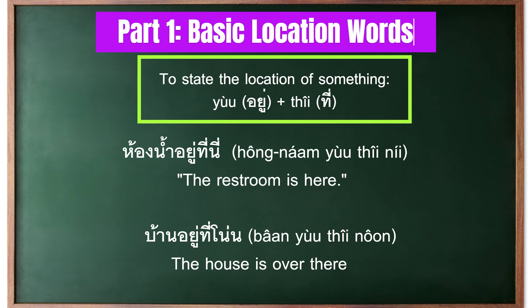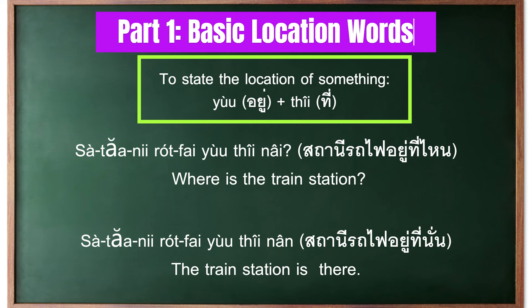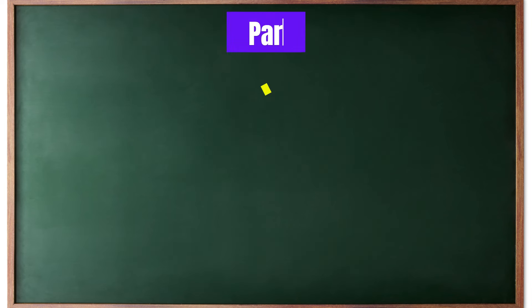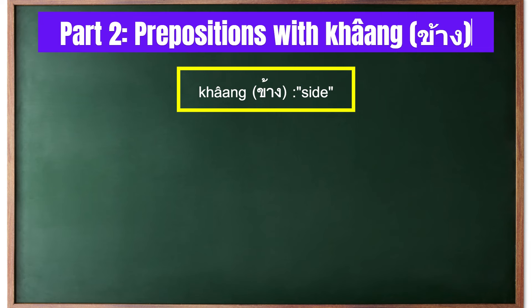For example, to say 'the restroom is here' you would use ที่นี่, and to say 'the house is over there' you would use ที่โน่น. Another example: the train station is there, using ที่นั่น. Many prepositions in Thai can be prefixed by ข้าง, which means 'side', and this combination helps describe specific locations more accurately.